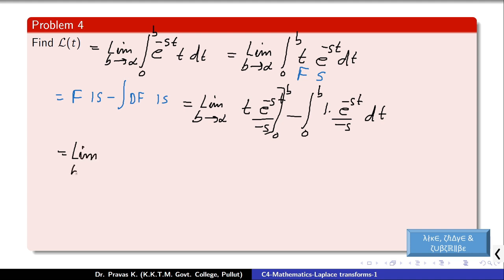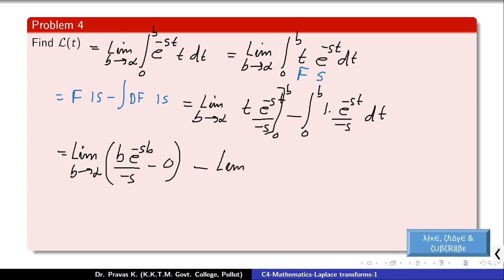We give the limit from 0 to b for the first part. When substituted with b, we get b times e raised to minus sb divided by minus s; when substituted with 0, we get 0. For the second part, we integrate e raised to minus st, giving e raised to minus st divided by minus s, which with the existing minus s in the denominator becomes e raised to minus st divided by s squared, with limits from 0 to b.